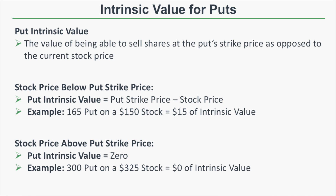Now let's talk about intrinsic value for put options. A put's intrinsic value represents the value of being able to sell shares at the put's strike price versus the current stock price. When the stock price is below the put strike price, intrinsic value equals put strike price minus stock price. For example, a $165 put on a $150 stock has $15 of intrinsic value. If the stock is above the put strike, intrinsic value is zero — there's no value selling at a lower price than the market.